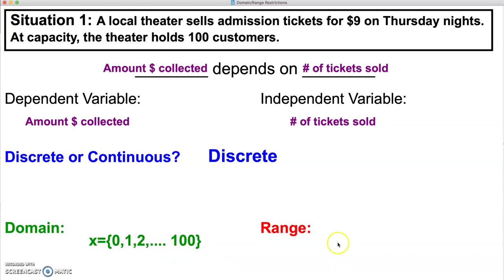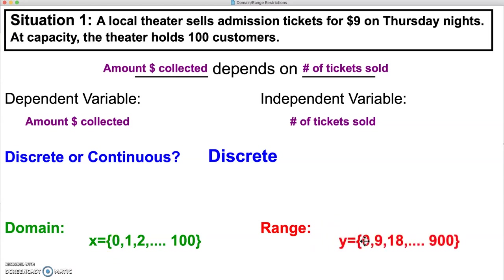For our range, remember our range values depend on our domain, so we determine our range from the domain values. Starting with the first domain value of zero, if zero tickets are sold, the amount of money collected will be zero. If we sell one ticket, $9 would be collected. If we sell two tickets, $18 would be collected, all the way up to our capacity of 100, which would give us $900 collected. Notice how this range set depended upon our domain restriction.